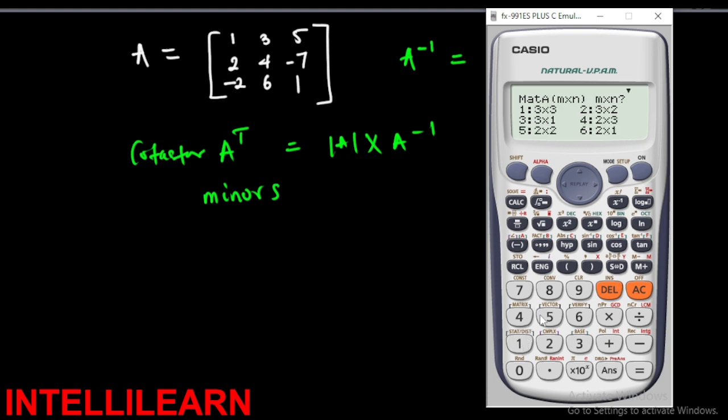We input our matrix—maybe A, B, or C. Let's select A and it is a 3 by 3 matrix. Let's put the values. We have 1, we have 3, press equal, we have 5, equal, we have 2, we have 4, we have -7, then we have -2, then we have 6, then we have 1. So this is our matrix.